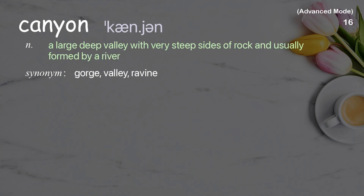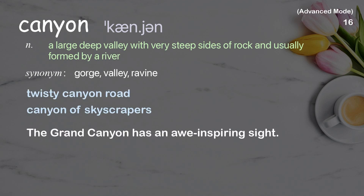Canyon: A large, deep valley with very steep sides of rock, usually formed by a river. Examples: Twisty canyon road. Canyon of skyscrapers. The Grand Canyon has an awe-inspiring sight.